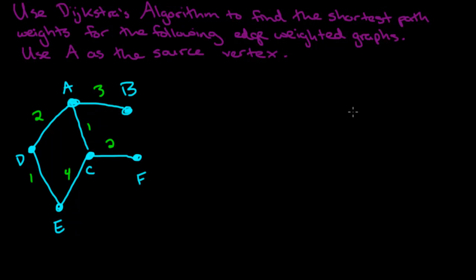We're going to look at a bunch of different examples of connected, edge-weighted graphs, and we're going to use Dijkstra's algorithm to find out the minimum path weights from vertex A as the source to all the other vertices in the graph. You should have already watched the video on Dijkstra's algorithm before looking at this video. What I'm going to do is run through the algorithm without writing out every single step — I'm just going to keep track of what I'm doing using a little table.